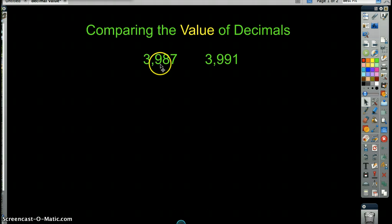After comparing those two place values, we then move to the tens. Now, this has 8 in the tens column, which is 80. And this has 9 in the tens column, which is 90. Now, 90 is more than 80.